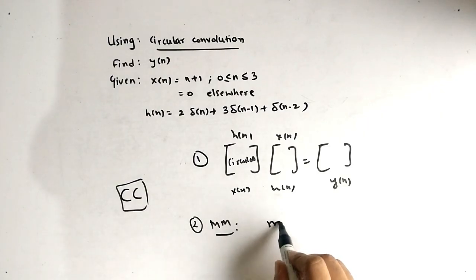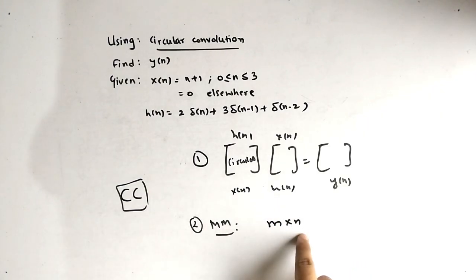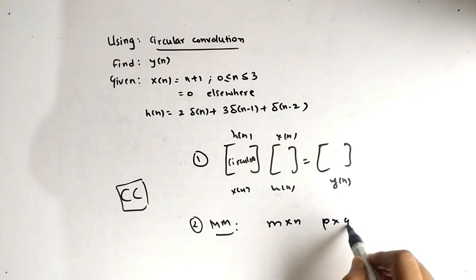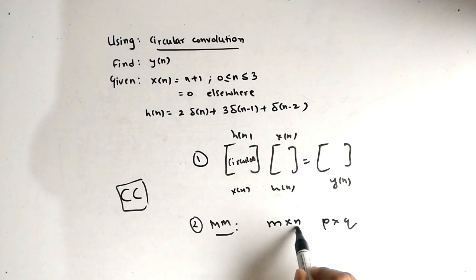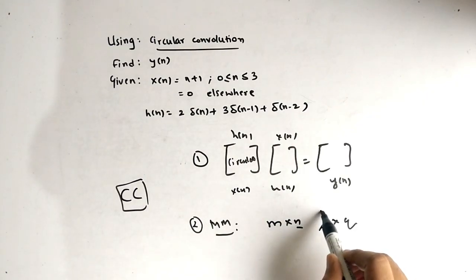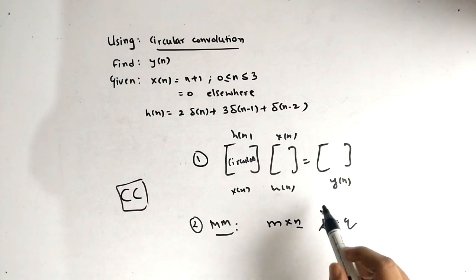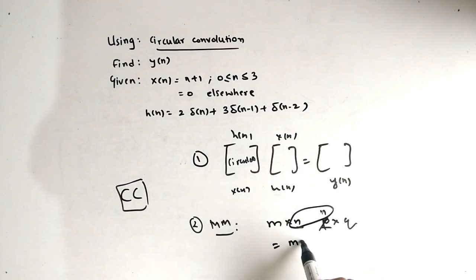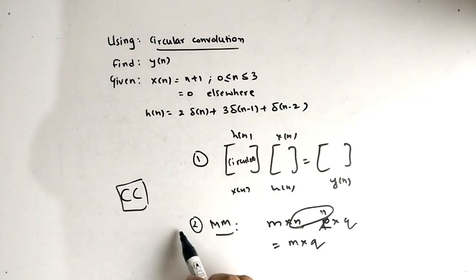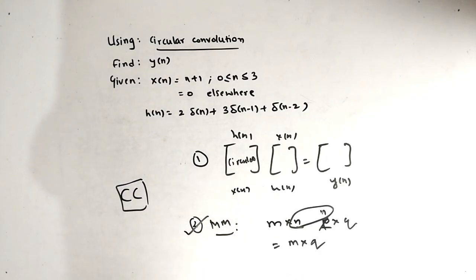The second point is matrix multiplication. An M×N matrix and a P×Q matrix can be multiplied only when these two inner dimensions are equal, meaning P should be equal to N. The final answer will then have M rows and Q columns. This is the matrix multiplication rule you should know, and this leads to the next point.